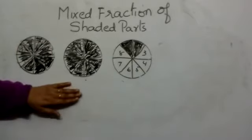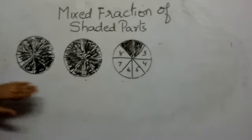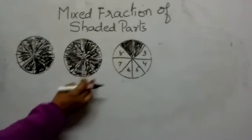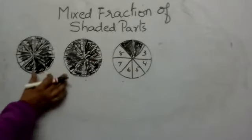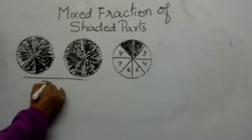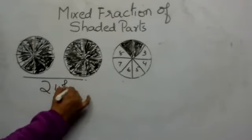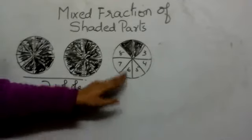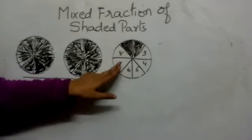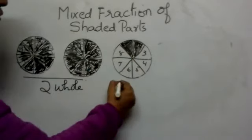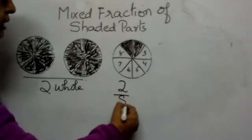Here you find two whole parts which are shaded. Let's count the number of parts — there are eight parts. Out of these eight parts, two parts are shaded. So you write the fraction as two by eight.